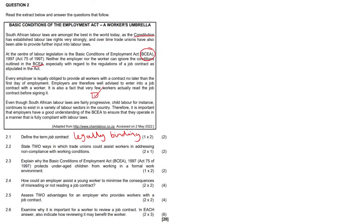Question 2.2: State two ways in which trade unions could assist workers in addressing non-compliance with working conditions. Trade unions have employee interests at heart — they protect employees. They could conduct regular surveys with their members to see how they are doing, and they could provide methods for workers to report any non-compliance through better channels of communication. They can ensure that workers report non-compliance without fear of victimization, and they could organize legal strikes, protests, mass action, and picketing, ensuring workers are not victimized. They've got remedies in difficult situations.